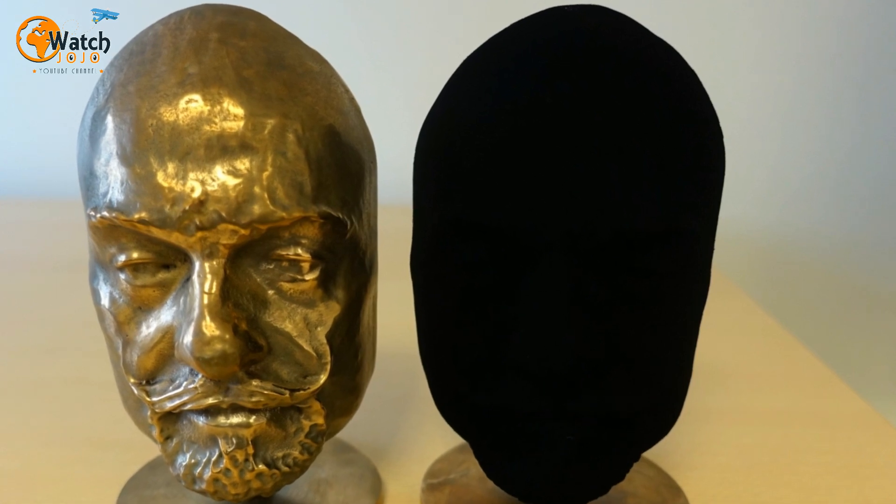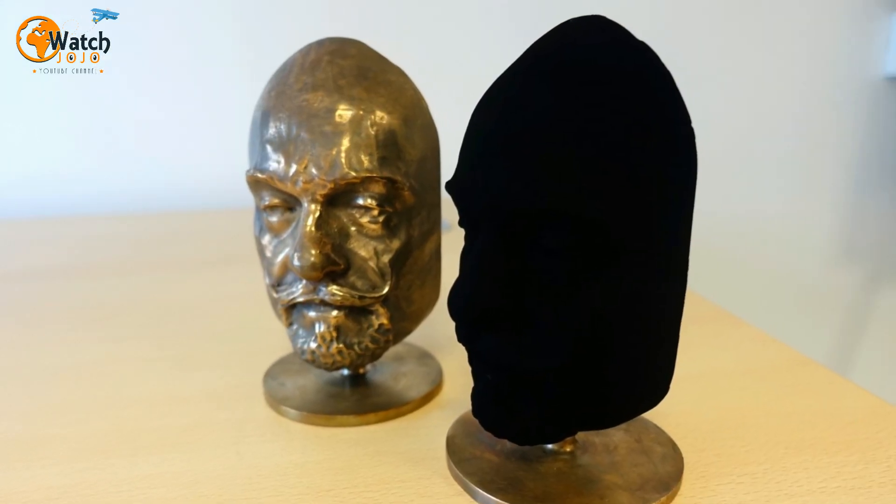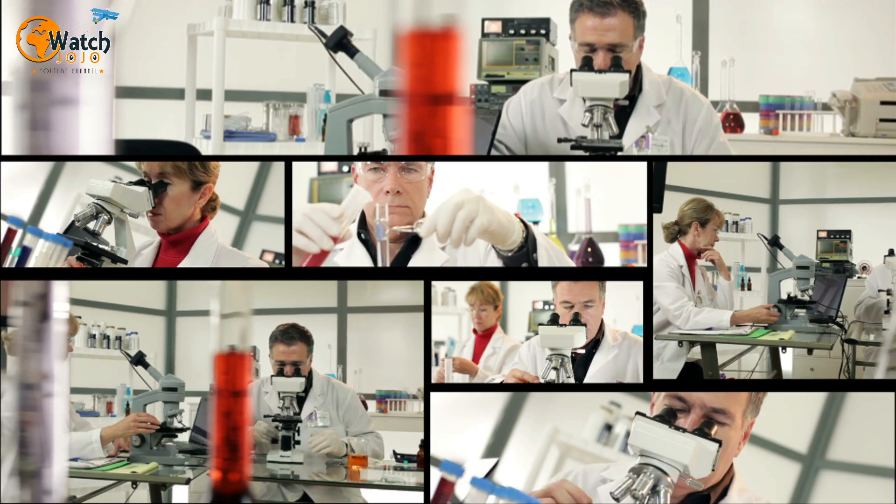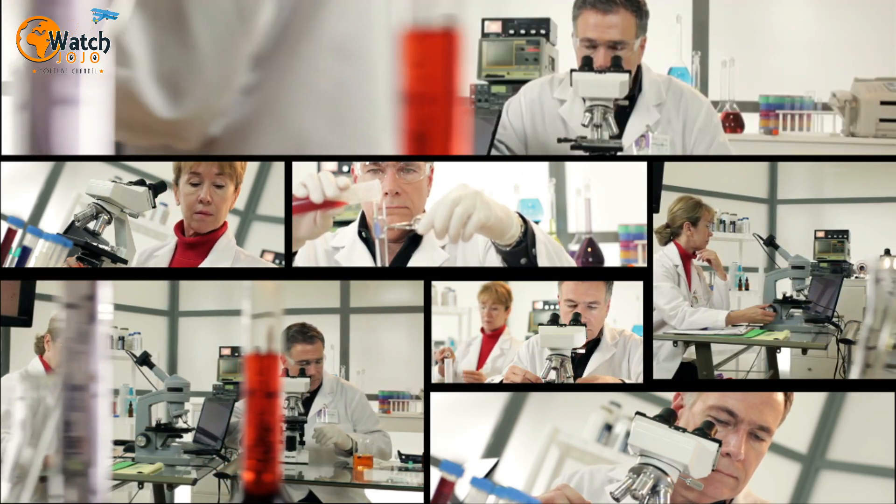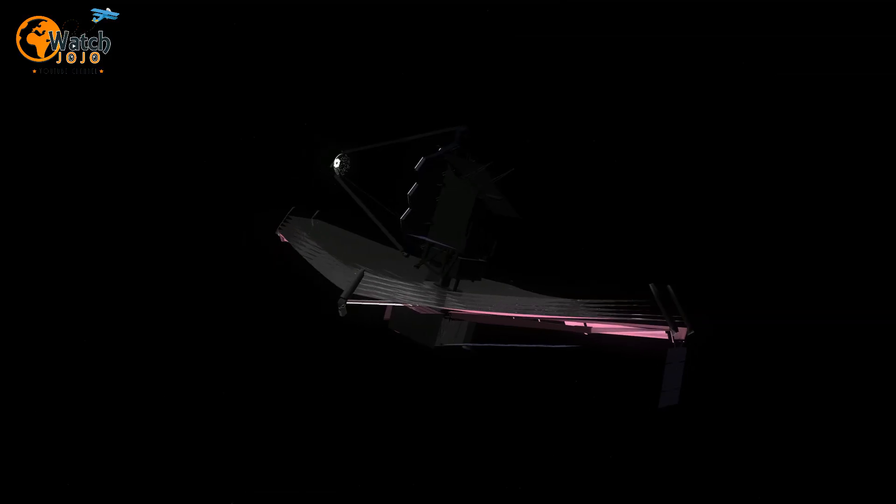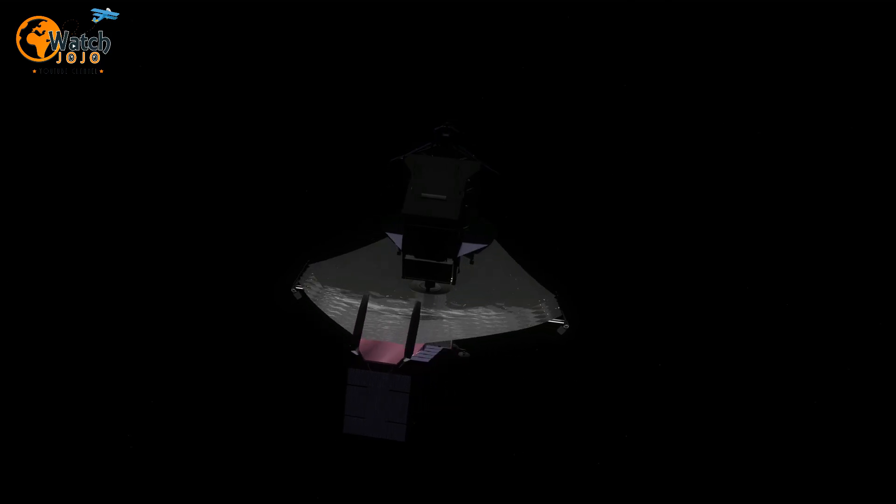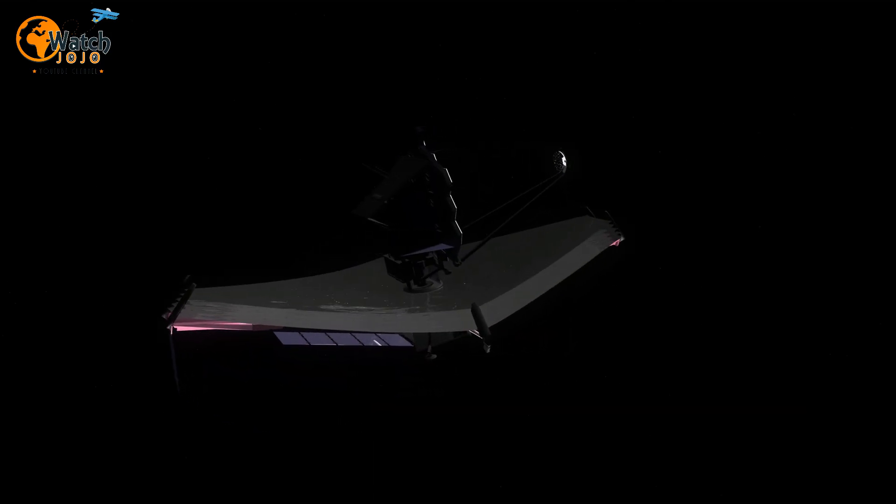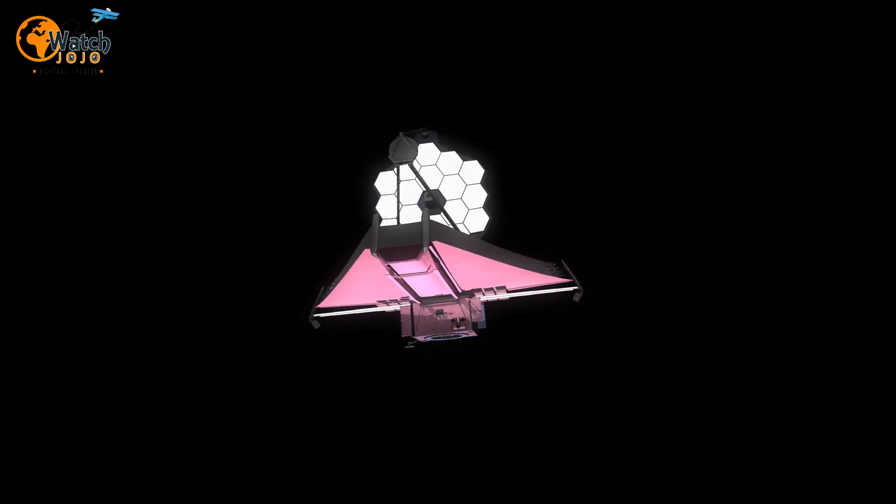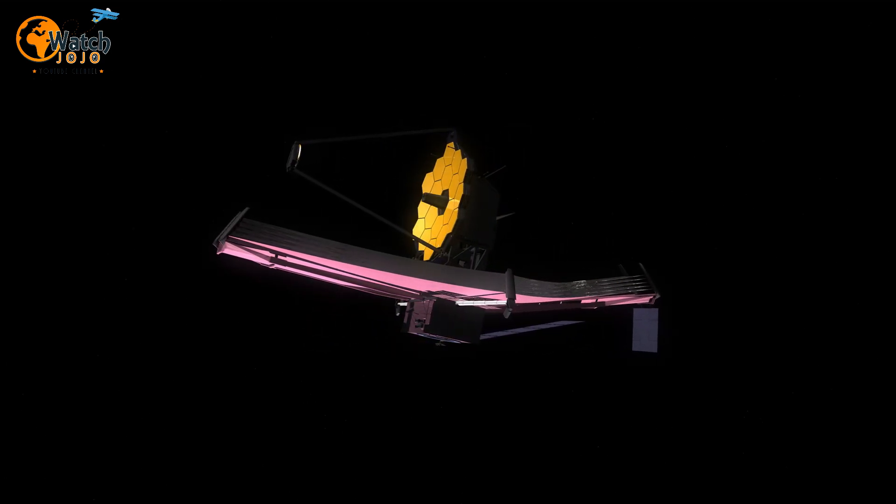So why did Surrey Nanosystems create Vantablack SVIS? Why create something that doesn't reflect light? Well, apparently Vantablack SVIS can help revolutionize scientific discoveries. It's important to note that the Hubble telescope rotating around the Earth uses black paint to reduce light reflection when capturing images. Can you imagine the kind of images scientists will receive if the Hubble telescope uses Vantablack SVIS instead of just regular black paint?